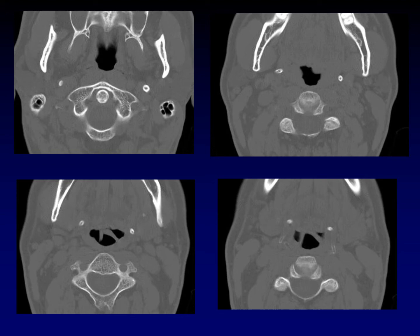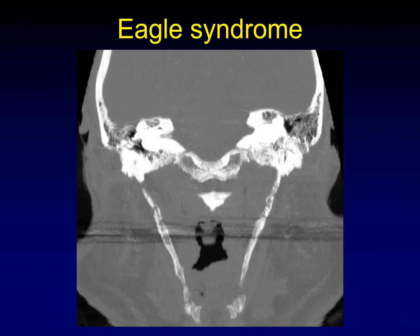This series of CT images shows abnormal ossification of the styloid process — continuing down and essentially meeting the hyoid bone, so the entire length has become ossified. This can be called ossification of the stylohyoid ligament or elongation of the styloid process. However, ossification of the stylohyoid ligament alone is not EGLE syndrome. It must be accompanied by a characteristic pain syndrome presumed to arise from glossopharyngeal irritation. Reproducible pain along with stylohyoid ossification constitutes EGLE syndrome.